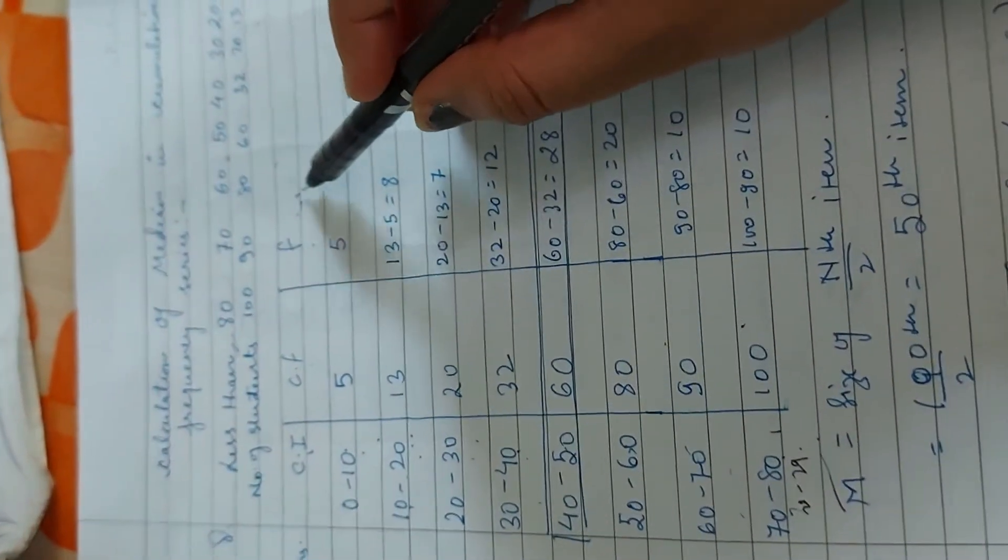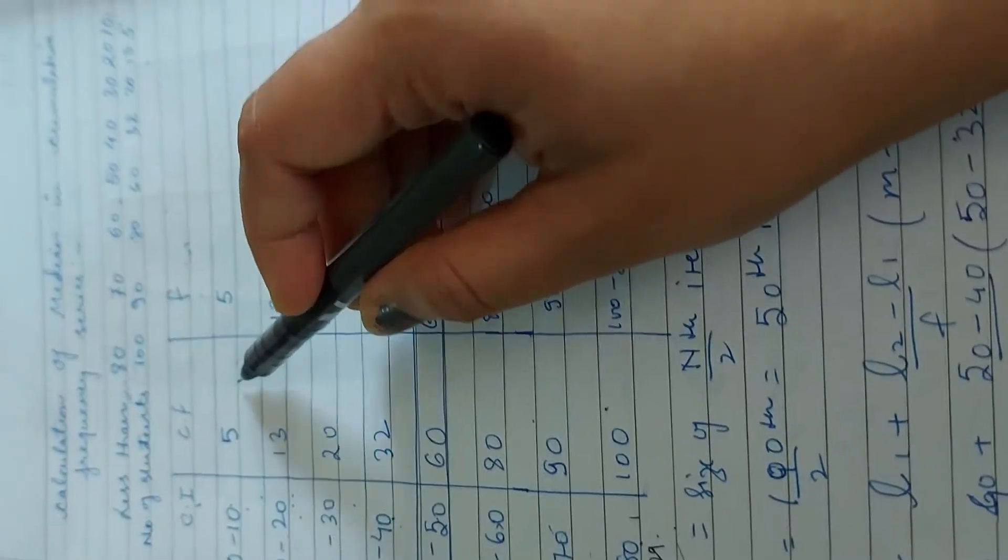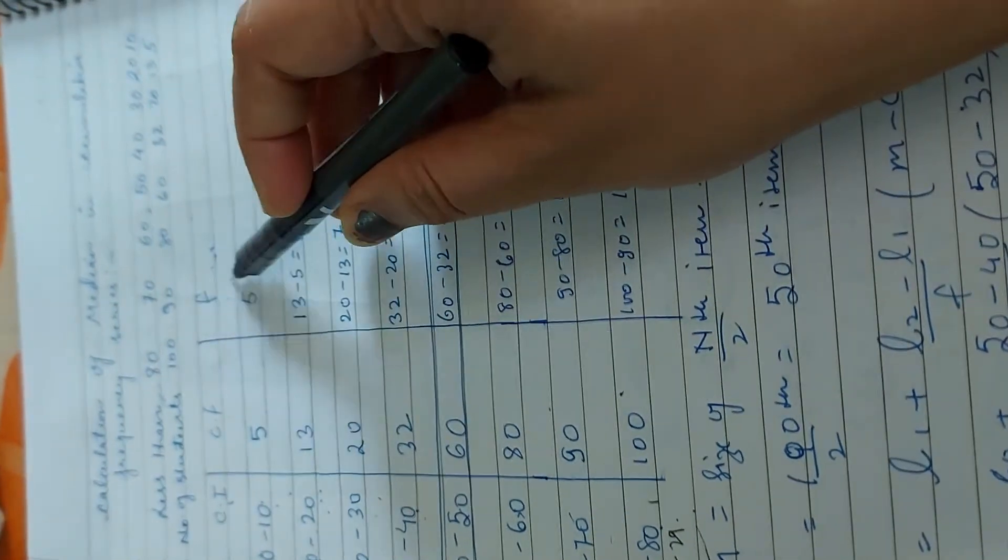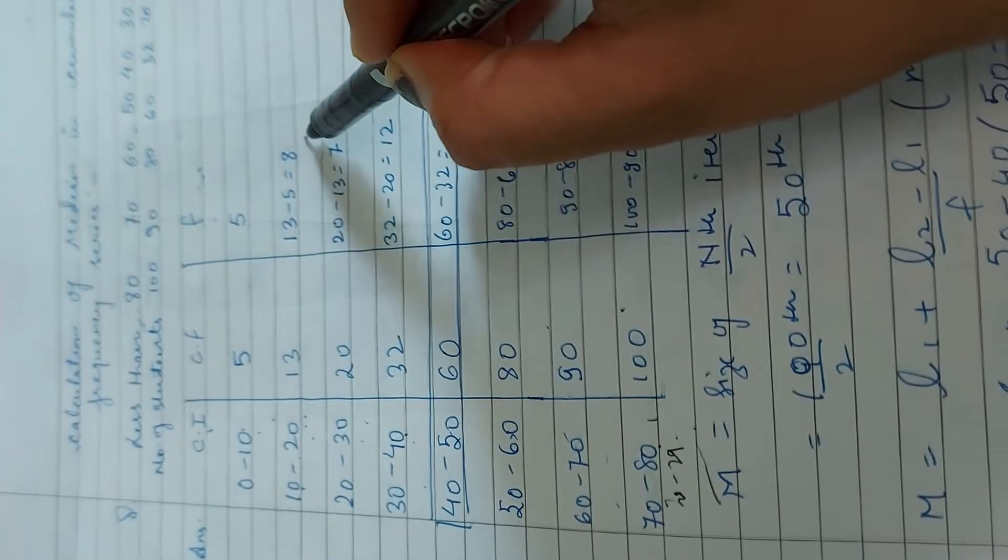Now we have frequency. How we will calculate frequency? We will calculate frequency by minus, because there is nothing above 5, so we will calculate that. Now, 13 minus 5, when you do this, it will be 8.